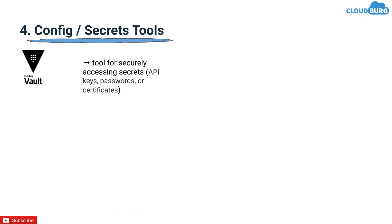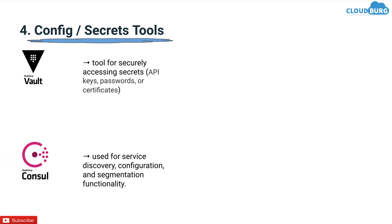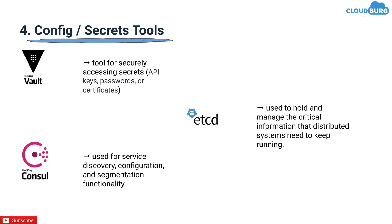Next under the category is config secret tools, and we have Vault, which is a tool for securely accessing secrets. Secrets can be API keys, passwords or certificates. Consul is basically a service registry and discovery tool for configuration and segmentation functionality. Etcd is used to hold and manage the critical information that distributed systems need to keep running. The top demanding config secret tool is Consul.